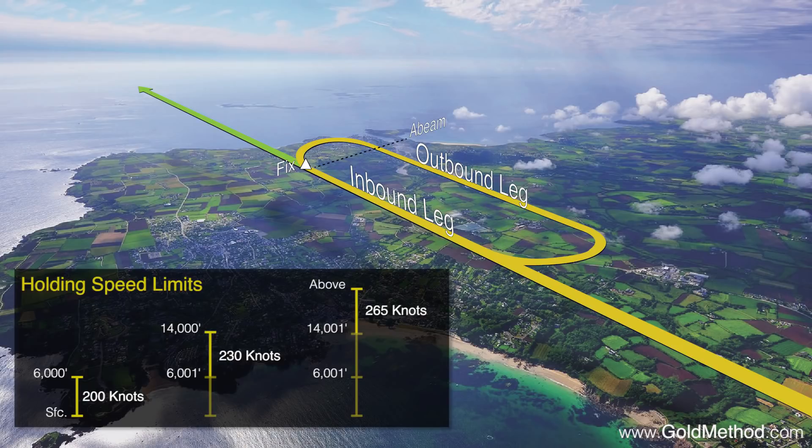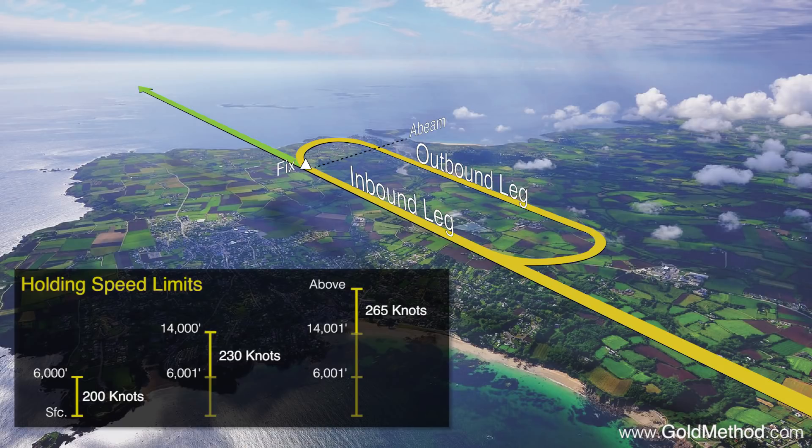So now that we know how to fly a hold, let's talk about how to enter one, depending on where your aircraft is coming from. There are three types of hold entries: parallel, teardrop, and direct. To find out which one we will use, we first have to find out where our airplane is in relation to the holding fix.